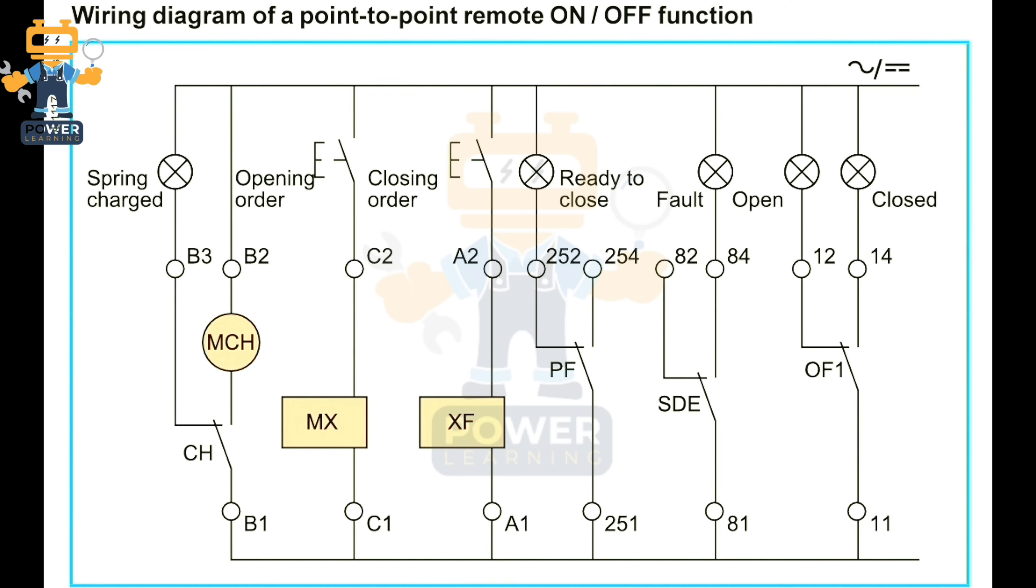We will put two push buttons - one on opening order and one on closing order. Once we press the closing order button, the breaker will turn on, and after that once we press the opening order button, the breaker gets open. In this way our breaker is working.